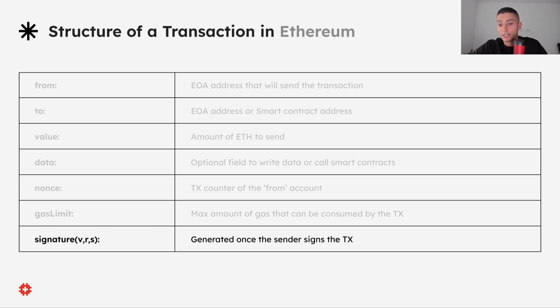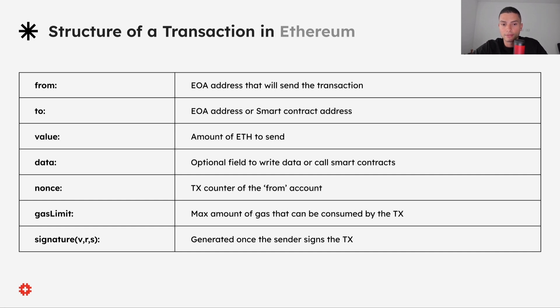And the 'signature' field is generated when the sender signs the transaction. This is a 65-byte string with three parameters: V, R, and S.